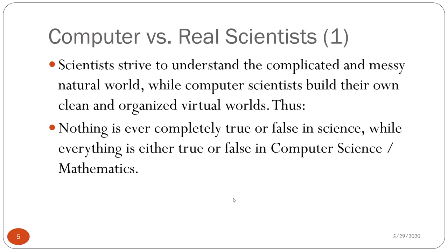There's nothing like true and false in data science. Computer science deals with binary a lot — our data is represented in zeros and ones, and hardware accepts signals in zeros and ones. But real-world data is not so simple. The message is that computer scientists work differently than real scientists, and as data scientists we need to understand and adapt to this difference.